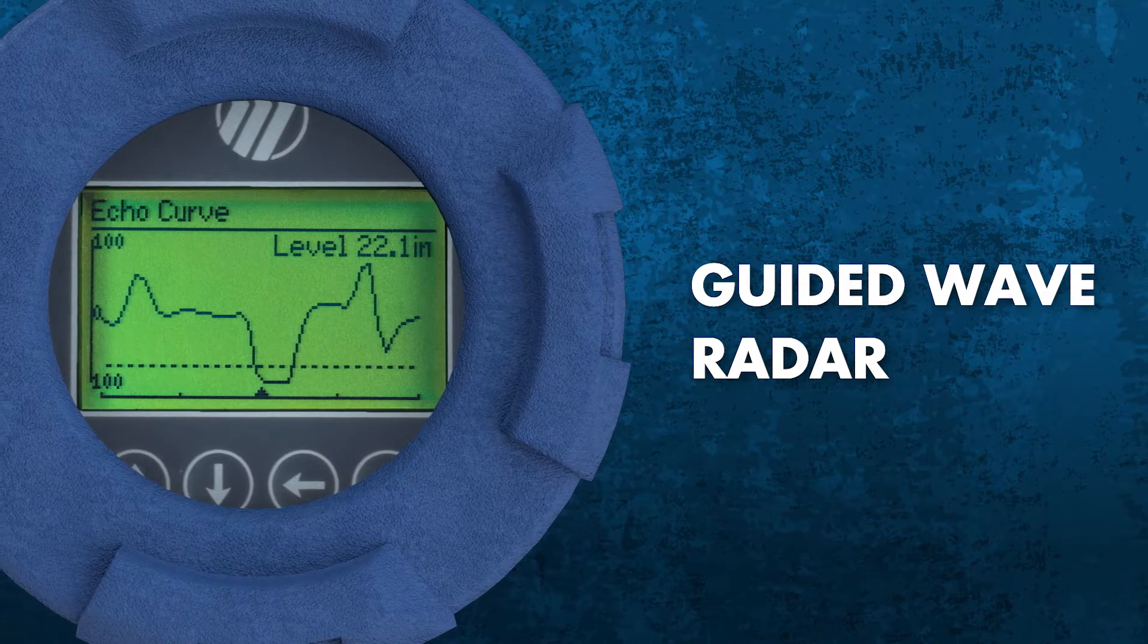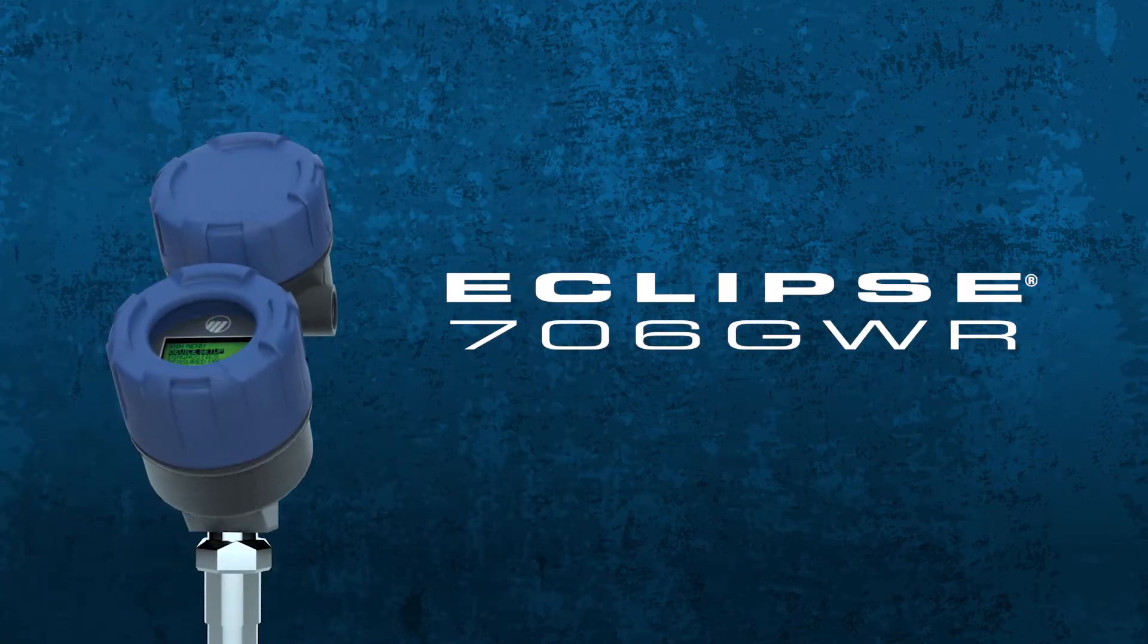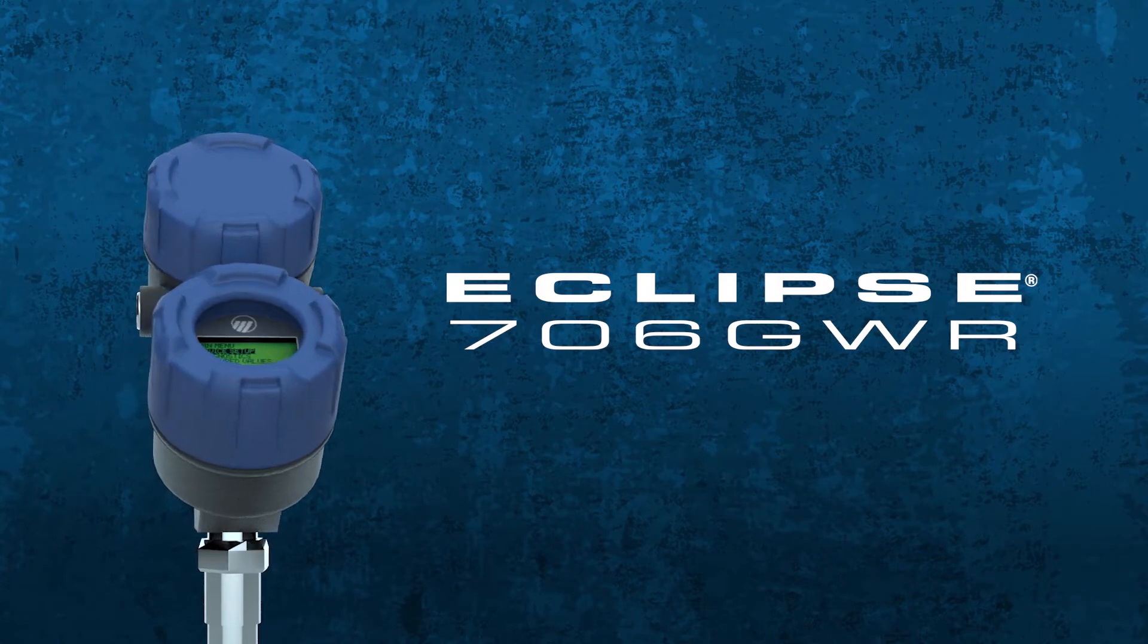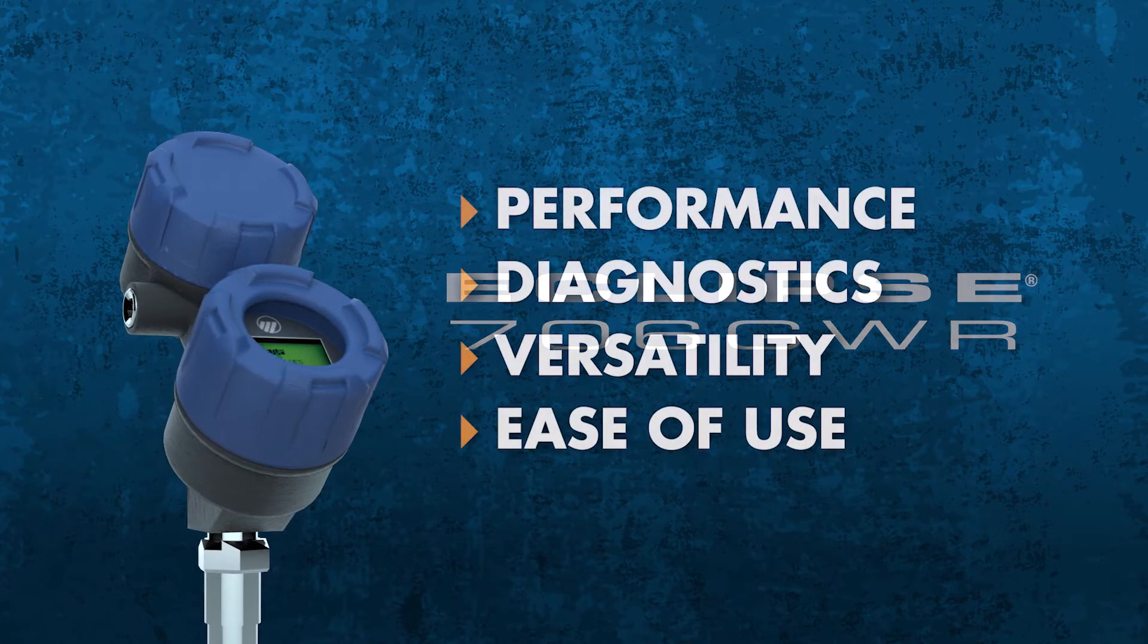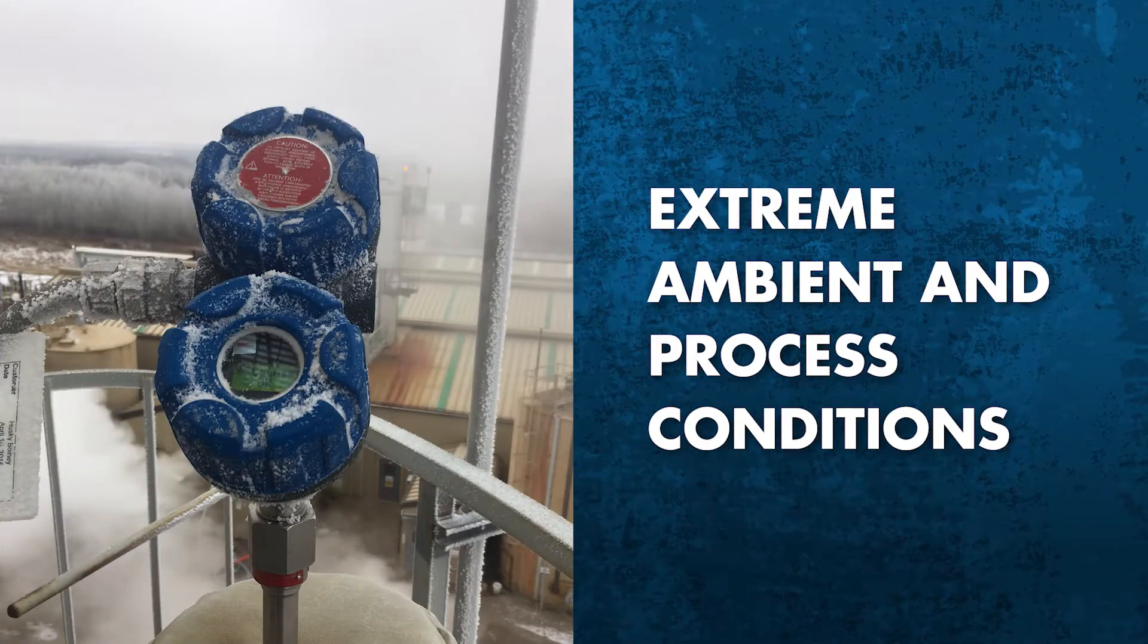Let's see how those critical factors make all the difference in guided wave radar. The Magnetrol Eclipse Model 706 sets the standard for guided wave radar transmitters, and it all starts with performance. Eclipse transmitters are trusted across process industries because they are virtually unaffected by extreme ambient and process conditions.